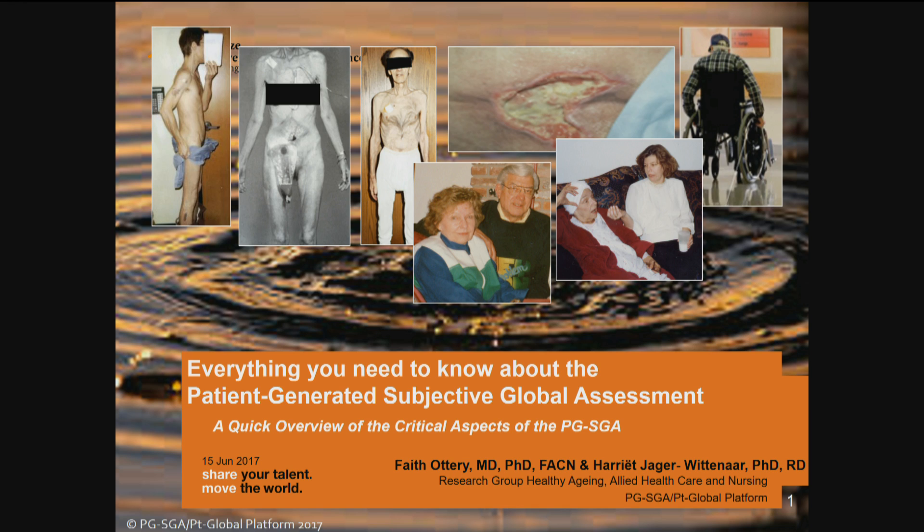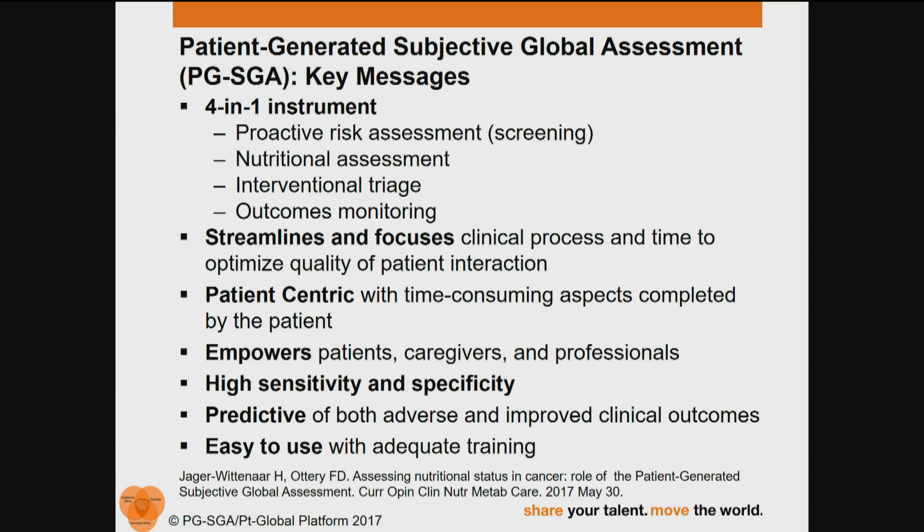The Scored PGSGA is used internationally as the reference method for a number of components in a four-in-one instrument: proactive risk assessment or screening, nutritional assessment, interventional triage, and outcomes monitoring. The tool helps streamline and focus the clinical process, and allows the time that you spend with the patient to optimize the quality of the interaction. The tool is patient-centric and basically empowers the patient to do the time-consuming aspects by themselves rather than by the carer. The tool empowers patients, caregivers, and professionals, and across a number of different research studies has been shown to consistently demonstrate high sensitivity and specificity.